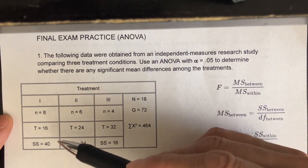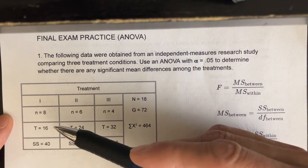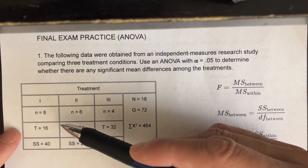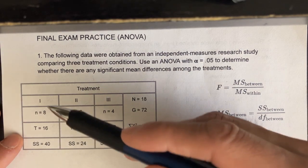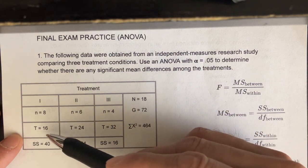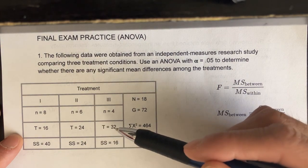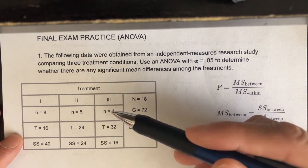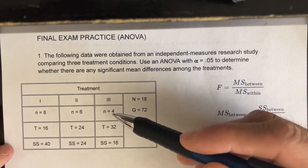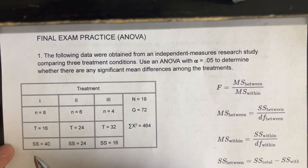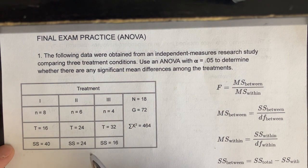The totals after summing the scores for each group are 16 for group one, 24 for group two, and 32 for group three. I can also see the sum of squares for each group at the bottom: 40, 24, and 16.